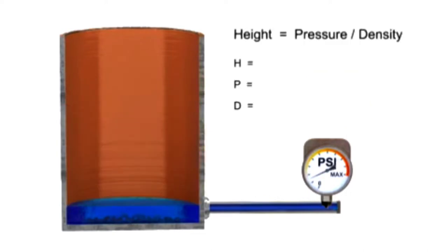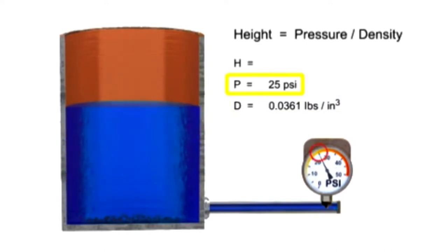To find pressure, a gauge is placed at the bottom of the vessel. With the water having a density of 0.0361 pounds per cubic inch, the level of the fluid is calculated by dividing the head pressure by the density of the fluid.